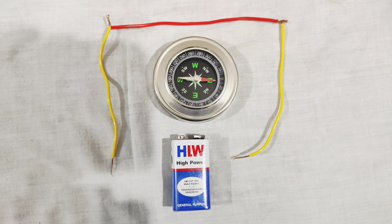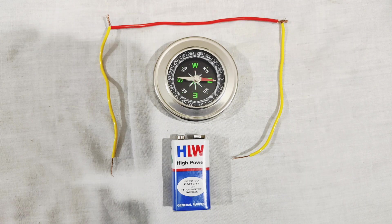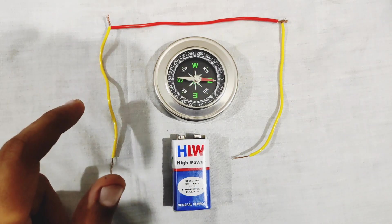Hello everyone. In this video I will explain the magnetic effect of electric current. When we pass electric current through any conductor, a magnetic field is generated. To detect that magnetic field, we will require one magnetic needle compass, a battery, and a wire.